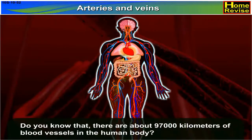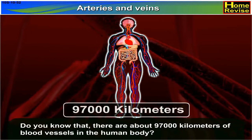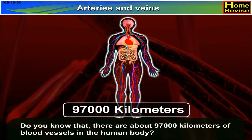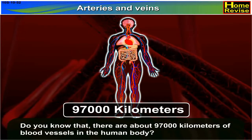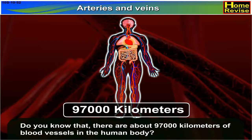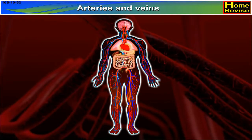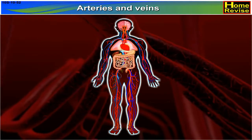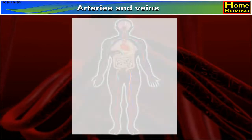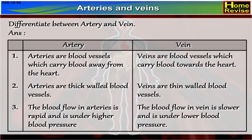Do you know that there are about 97,000 kilometers of blood vessels in the human body? Based on this topic, a question can be asked: Differentiate between the arteries and veins.